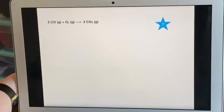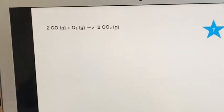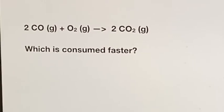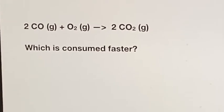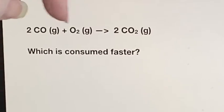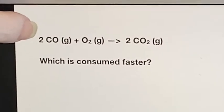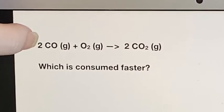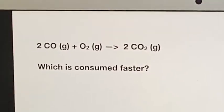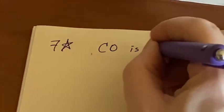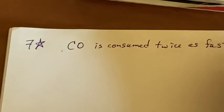So this is carbon monoxide and oxygen becoming carbon dioxide. Which is consumed faster? Well, if it's going to be consumed, it has to be a reactant. So I only have two choices, these two. Which is consumed faster? This is consumed faster because there's a two compared to a one. So I can write down then the carbon monoxide is consumed twice as fast as the oxygen.